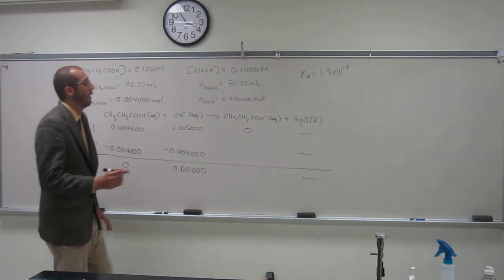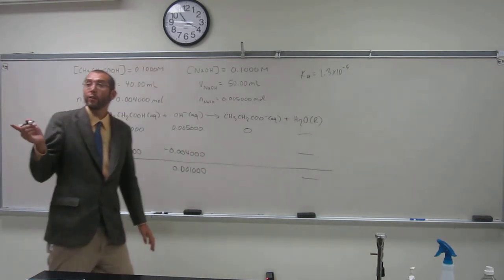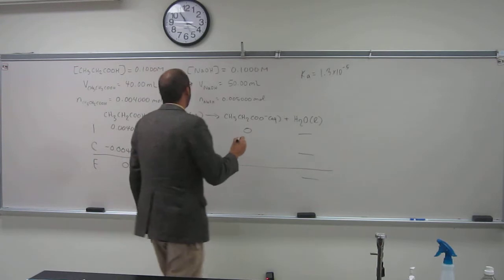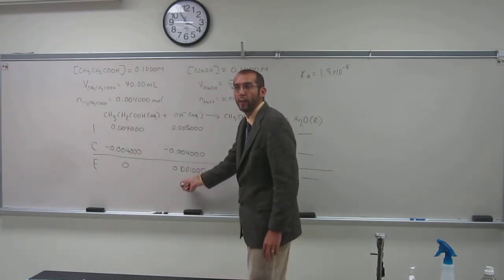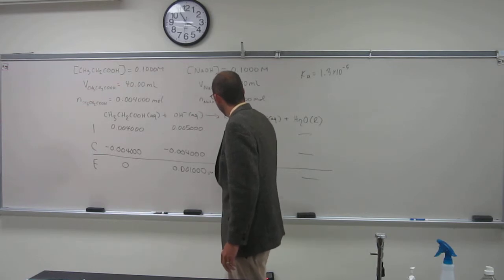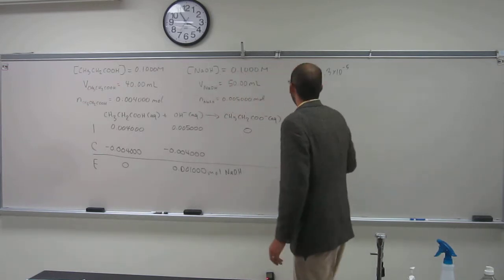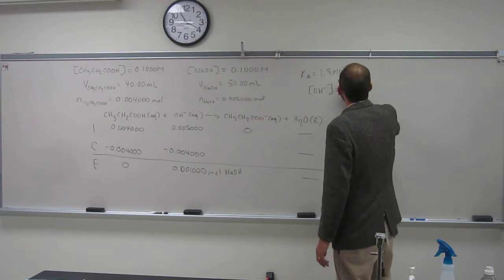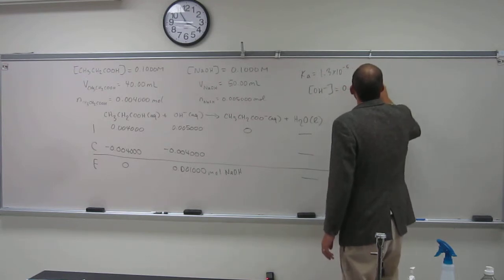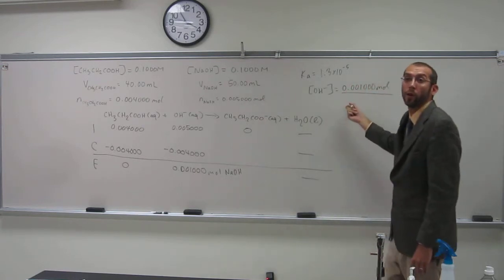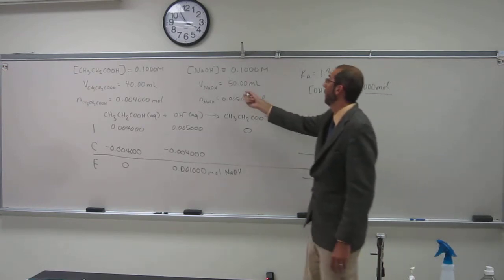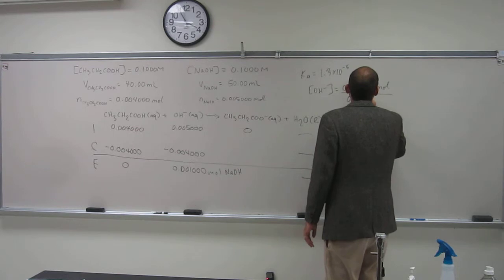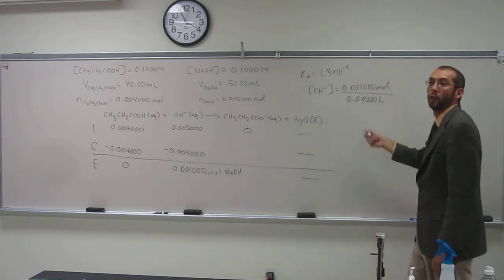Okay, so we can now figure out what the molarity of the hydroxide ion concentration is. Okay? Why? Because we have the number of moles of hydroxide, right? This is moles of sodium hydroxide or hydroxide ion. Okay, so the concentration of the hydroxide is gonna be, well, the number of moles divided by what? The total volume, right? So what's the total volume? 50 plus 40 mL, so 90 mL or 0.0900 liters, like that.